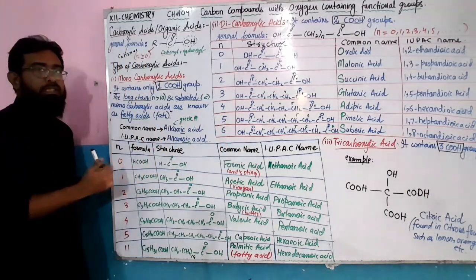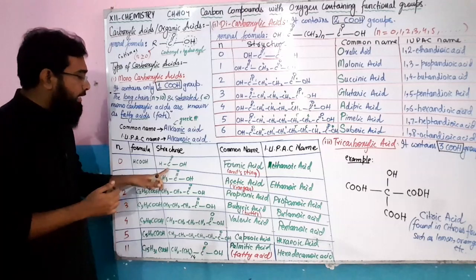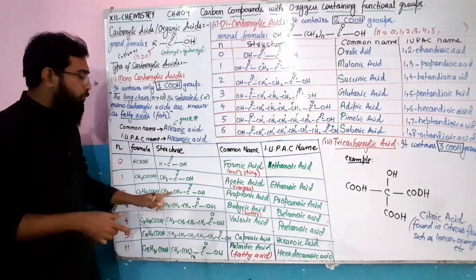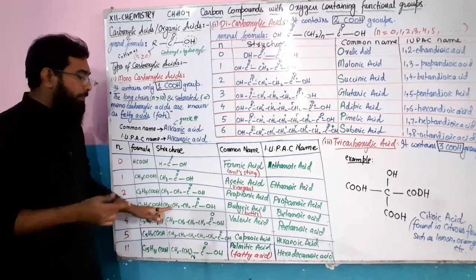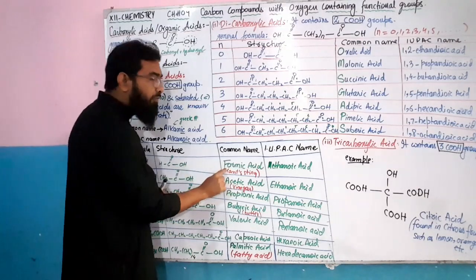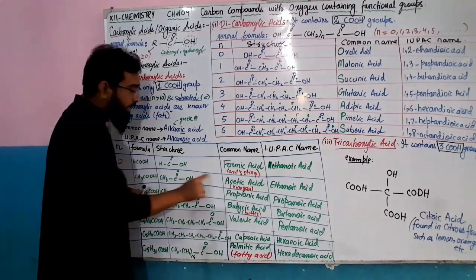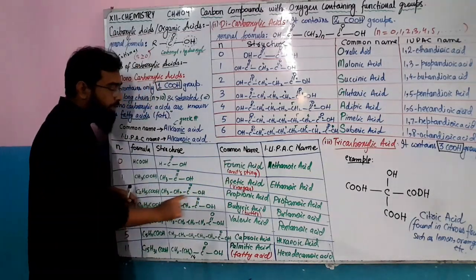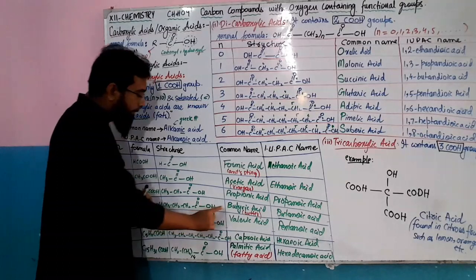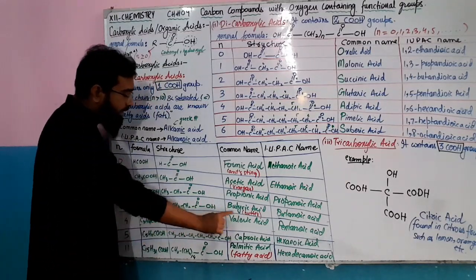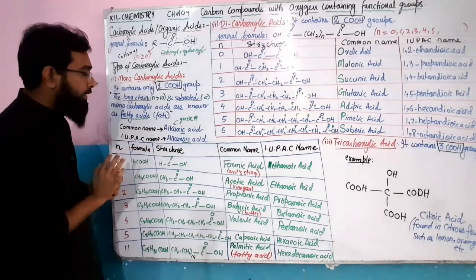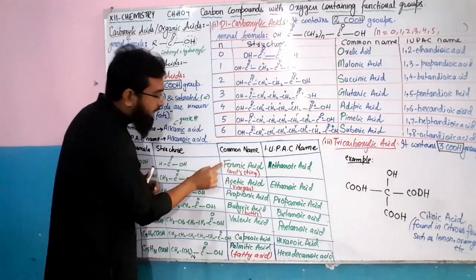The common names for monocarboxylic acids by carbon number are: 1 carbon = formic acid, 2 = acetic acid, 3 = propionic acid, 4 = butyric acid, 5 = valeric acid, 6 = caproic acid. These are the standard common names you should remember.